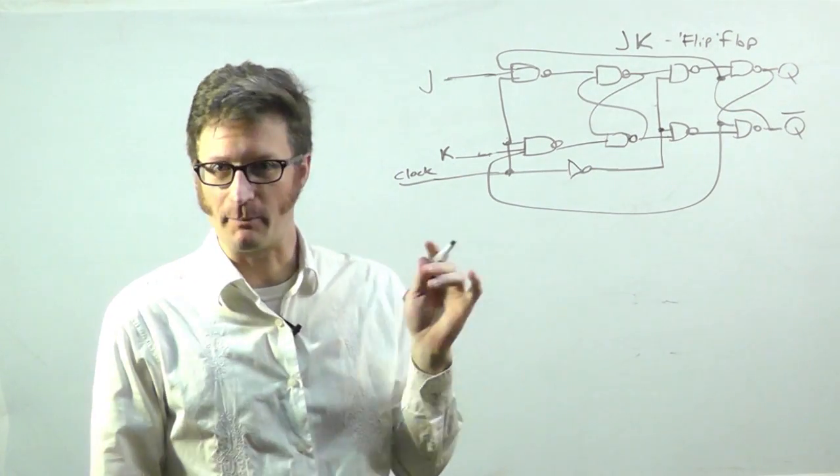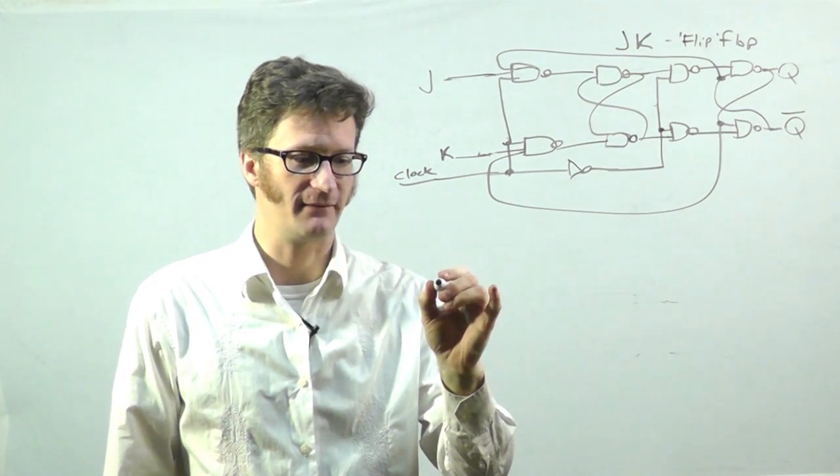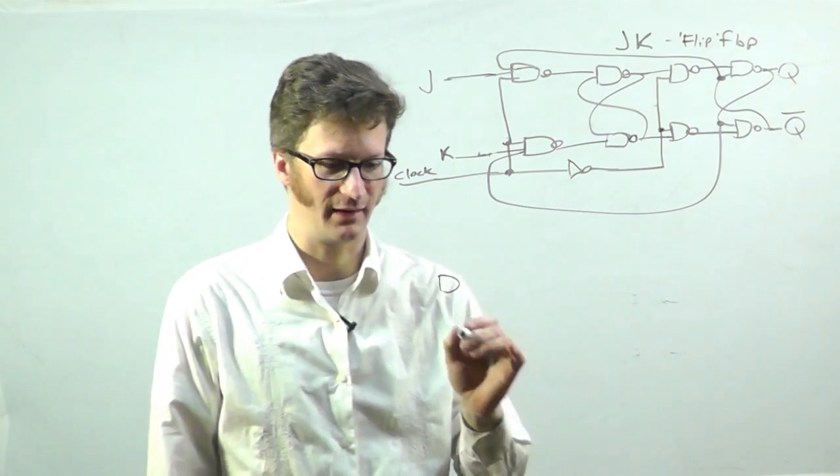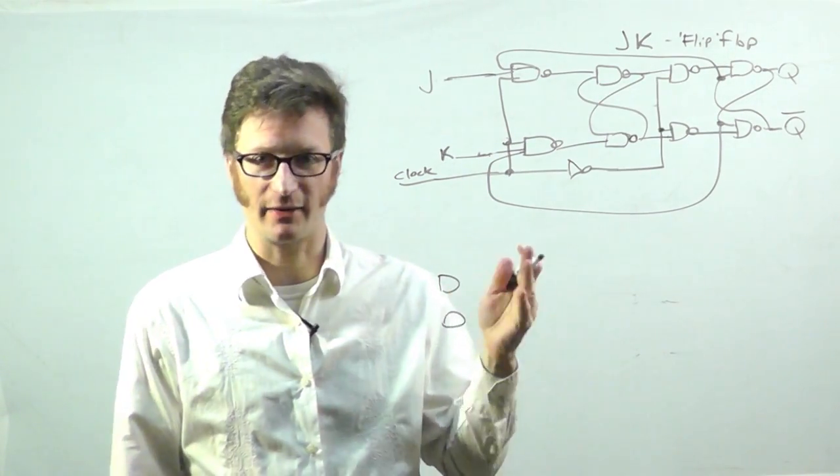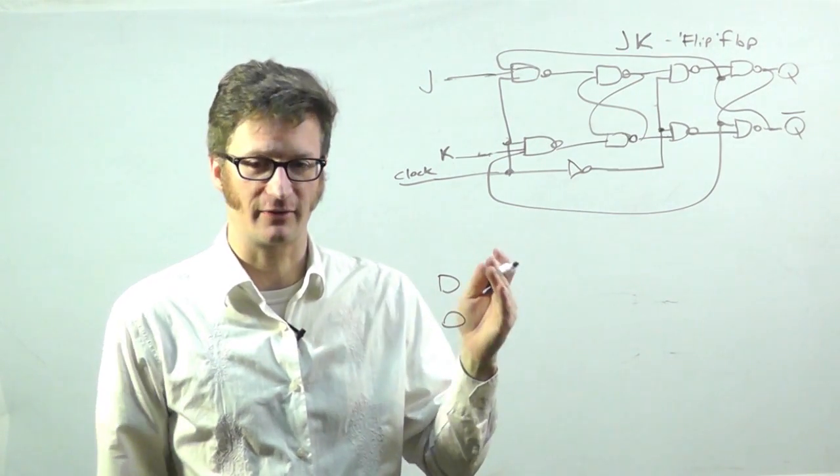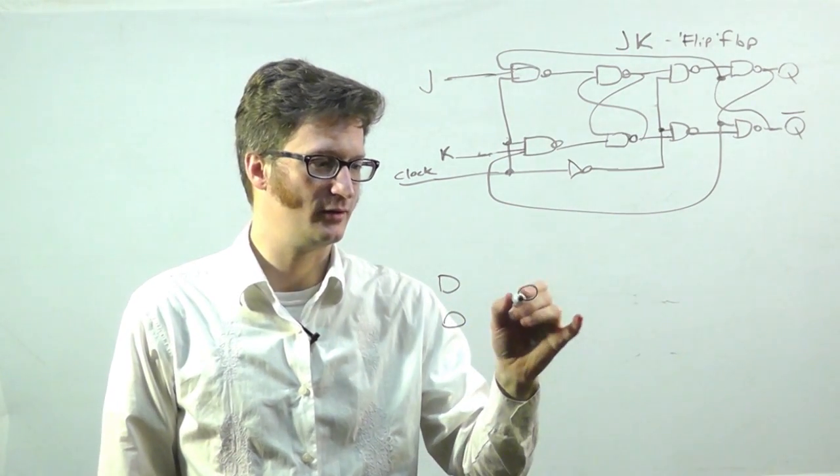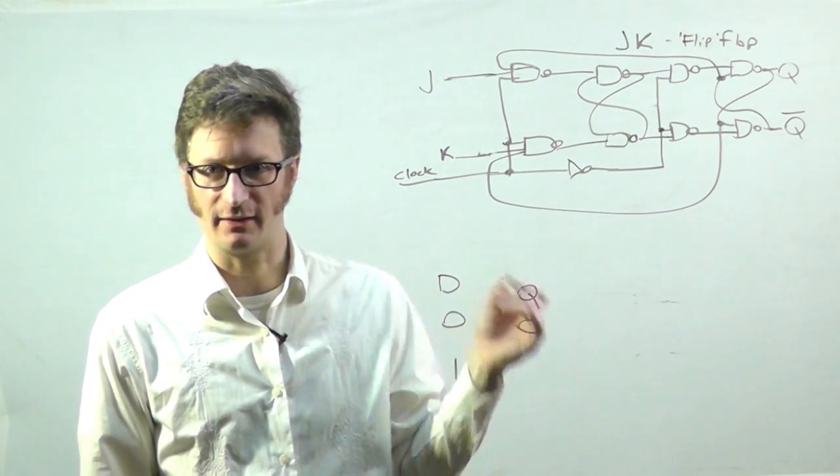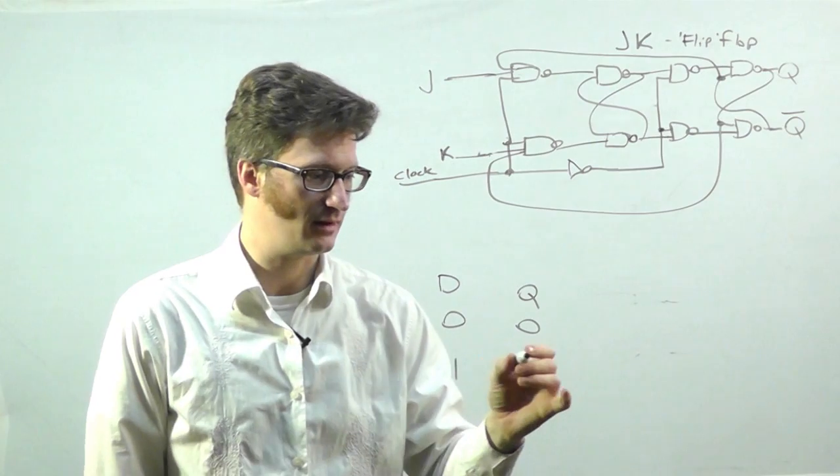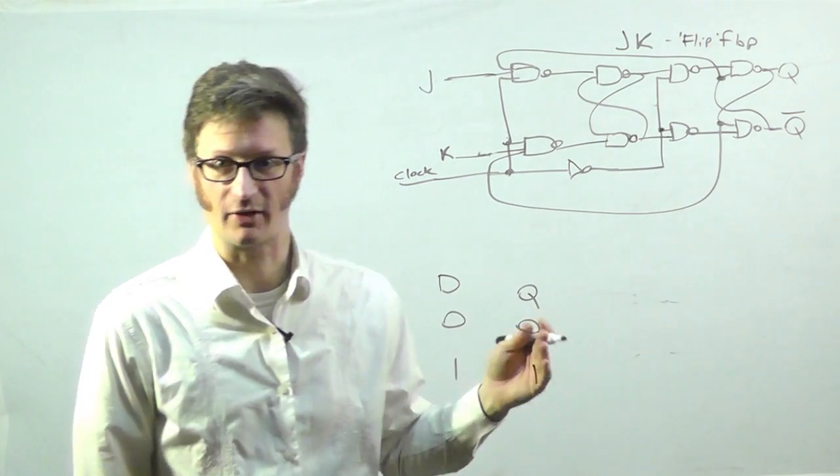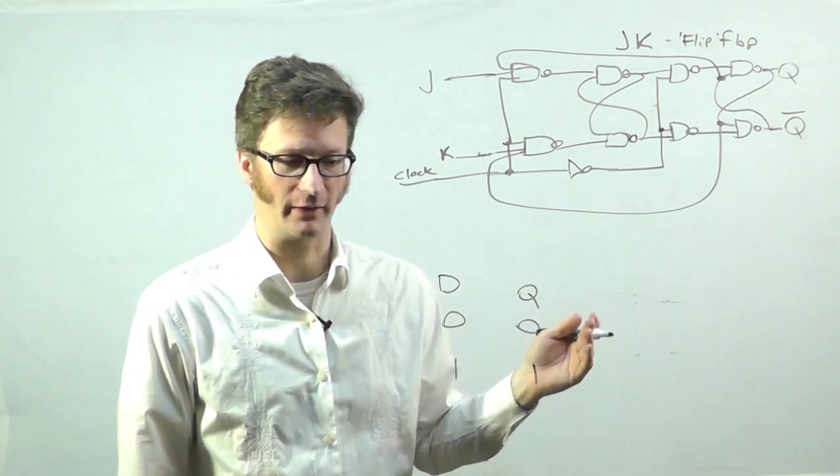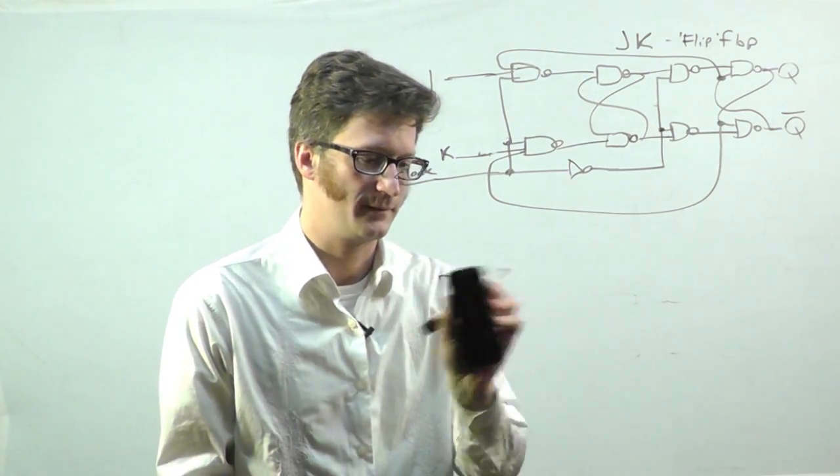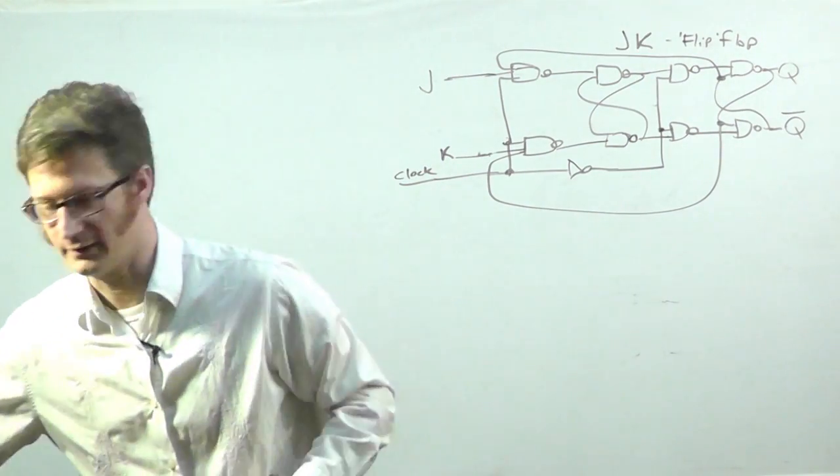And just to back up a little bit, the D flip-flop, if the D input is a zero on the next rising or falling edge, whichever type it is, the Q will become zero. And if D is a one on the next edge, it will become a one, whichever edge that is, whether it's rising or falling. For a JK flip-flop, it's a little bit different.